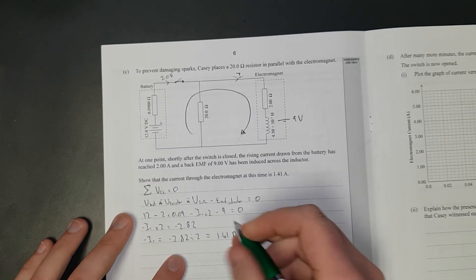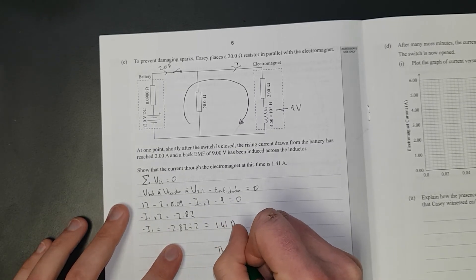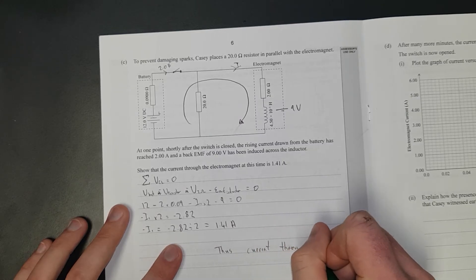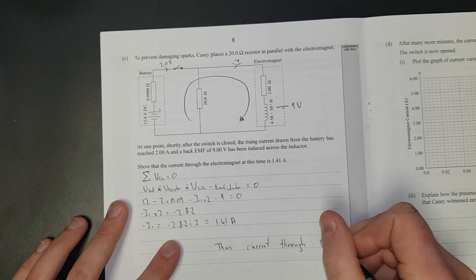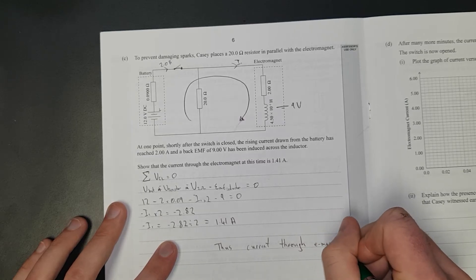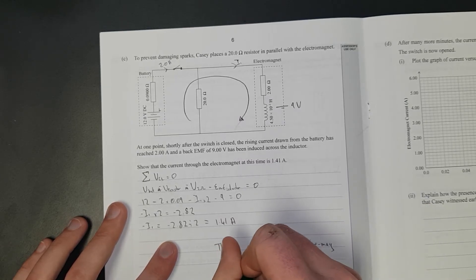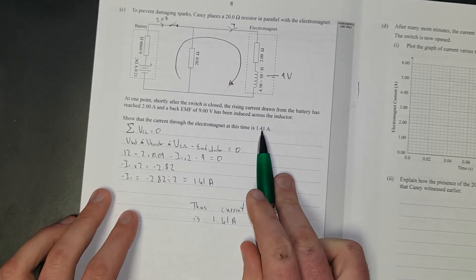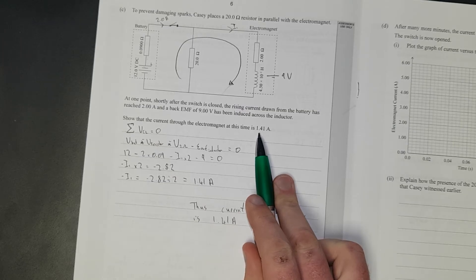Right, so I'll just write this. Thus, current through electromagnet is 1.41 amps. It would be a whole lot easier if they just hadn't have given us that. Instead of a show question, it would have just been a do question, because we wouldn't have had to do half the work, but whatever.